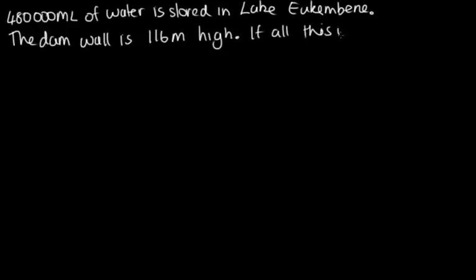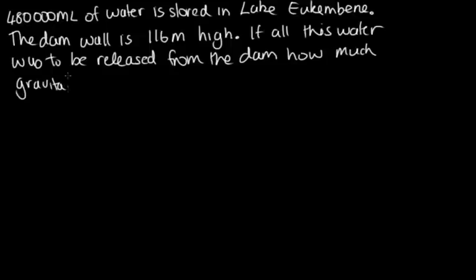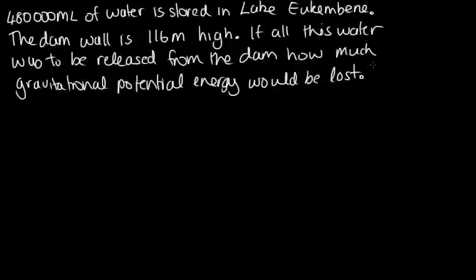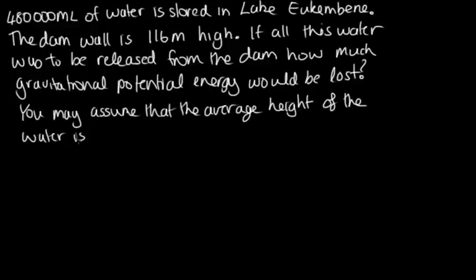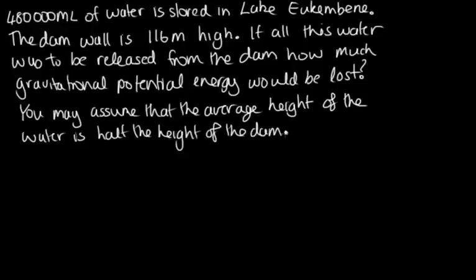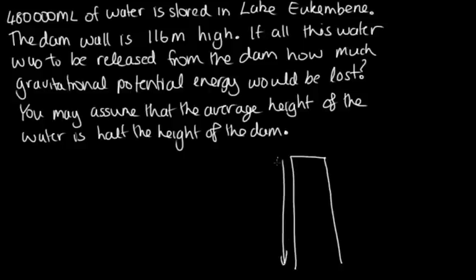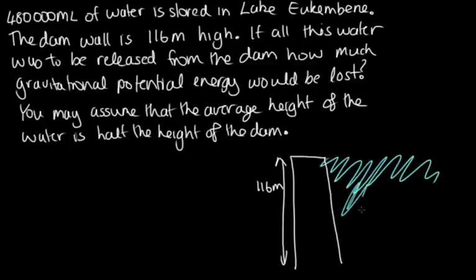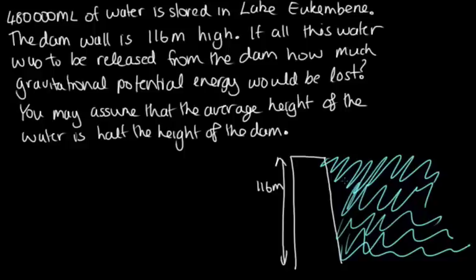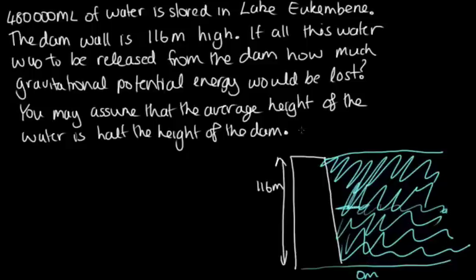The question is: 480,000 megalitres of water is stored in Lake Eukameen. The dam wall is 116 metres high. If all this water were to be released from the dam, how much gravitational potential energy would be lost? You may assume that the average height of the water is half the height of the dam. So we have a dam wall 116 metres high, with water from 0 metres at the bottom to 116 metres at the top, giving an average height of half of 116 metres.